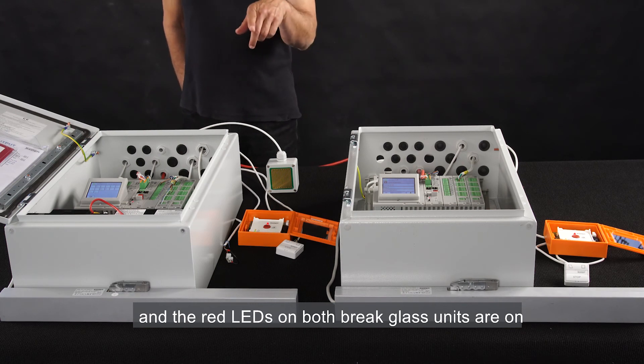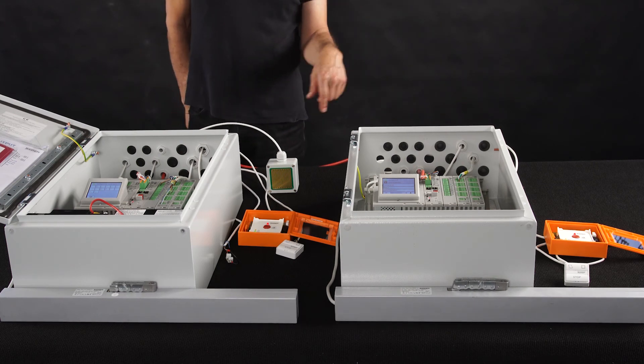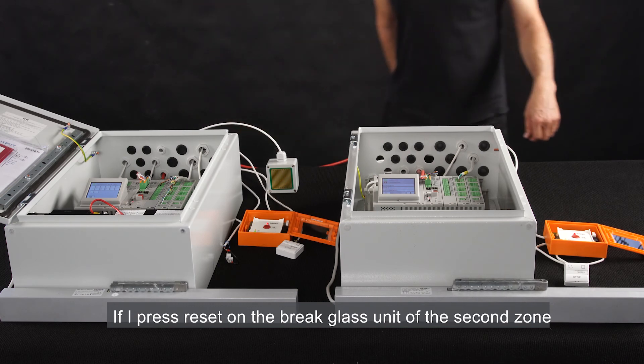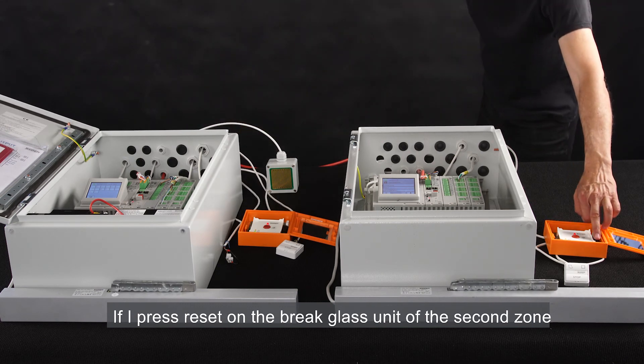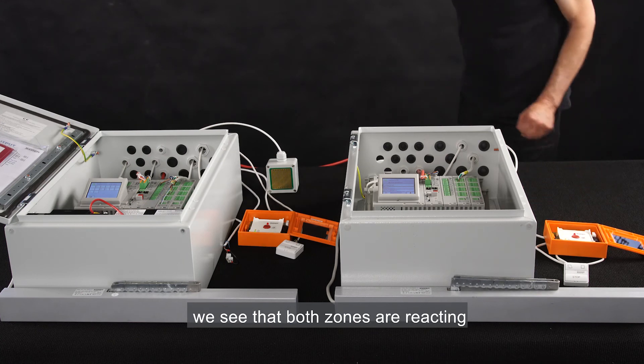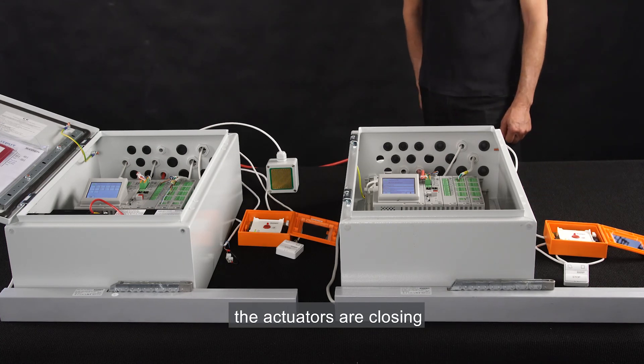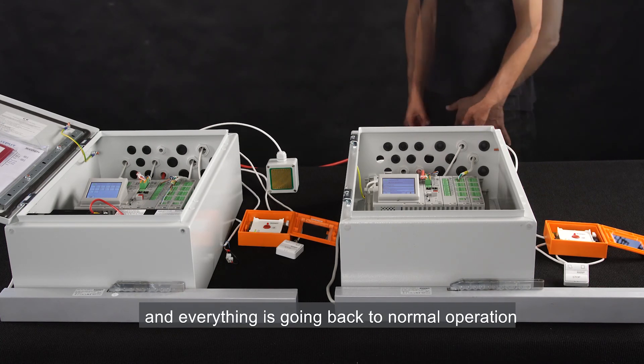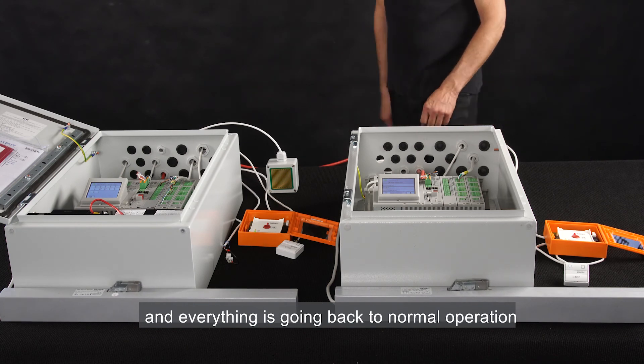If I press RESET on the brake glass unit of the second zone, we see that both zones are reacting. The actuators are closing, and everything is going back to normal operation.